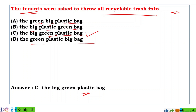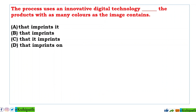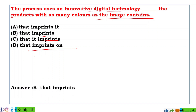Next: The process uses an innovative digital technology — dash — the product with as many colors as the image contains. Options: A: 'that imprints it', B: 'that imprints', C: 'that it imprints', D: 'that imprints on'. The answer is B — 'that imprints'. The process uses an innovative digital technology that imprints the product with as many colors as the image contains.